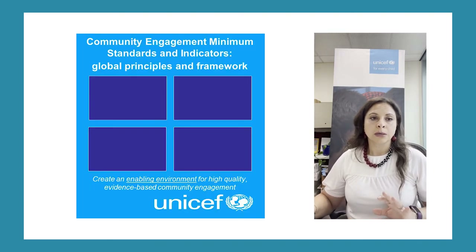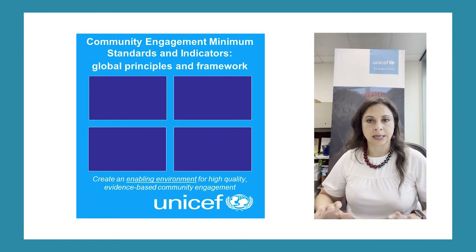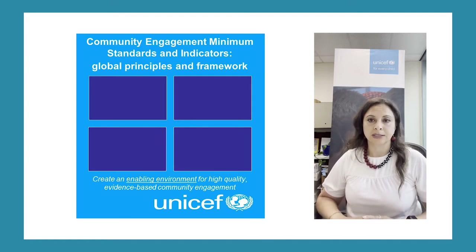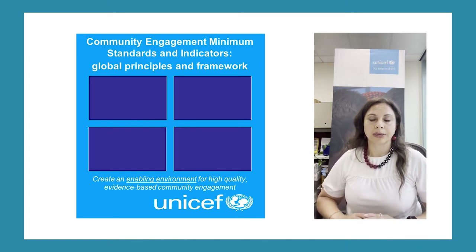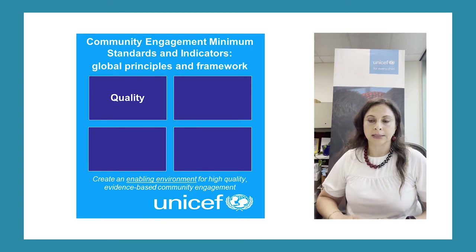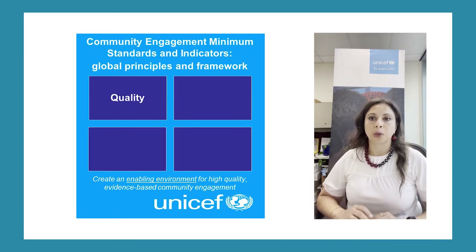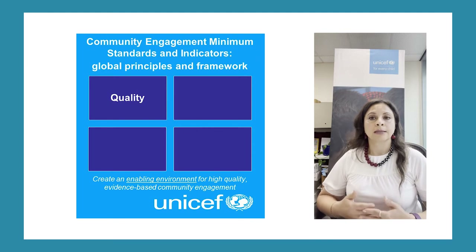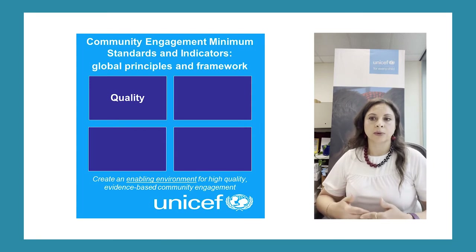There are global principles within the community engagement minimum standards centered around four core principles: quality, accountability, harmonization, and optimization. Community engagement is both a process and an outcome. Achieving quality at scale requires establishing common criteria, benchmarks, and actions, because there have been and still are a wide variety of approaches and interpretations of what constitutes quality. Establishing what those processes are and what the intended outcomes look like is very critical to claiming we can achieve quality.